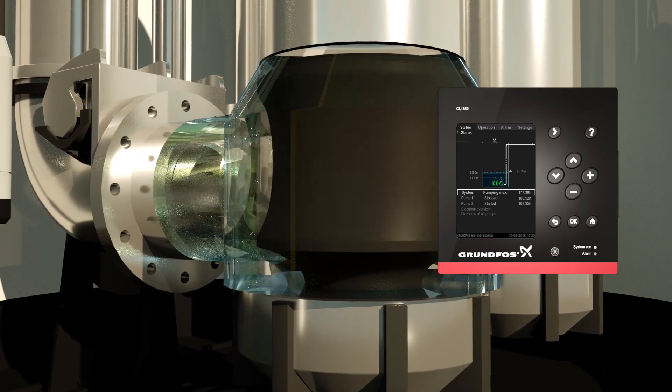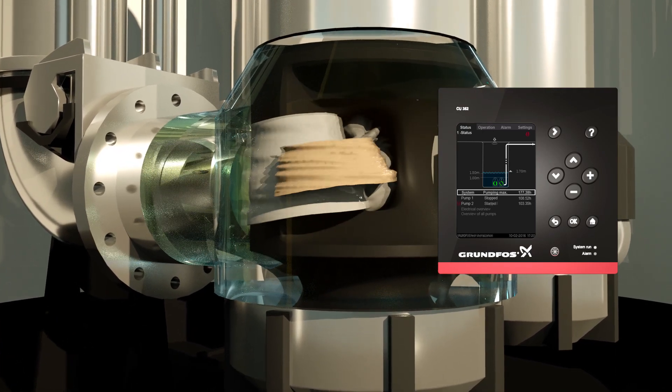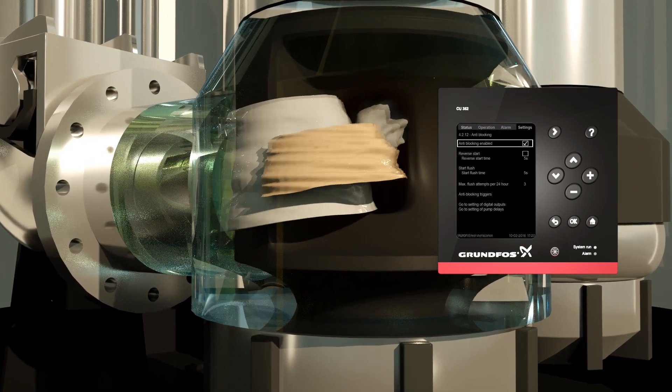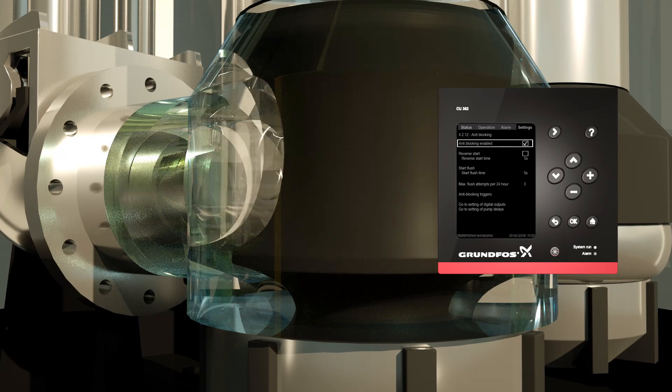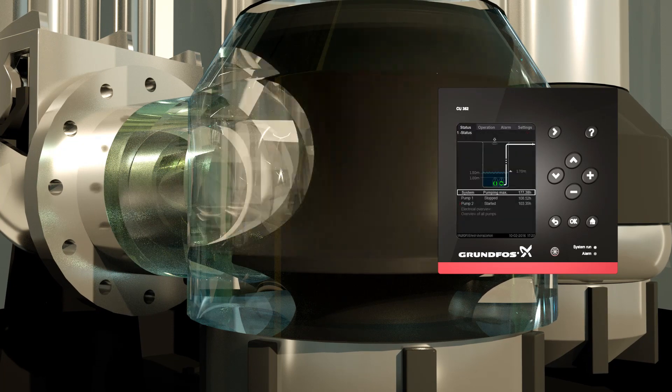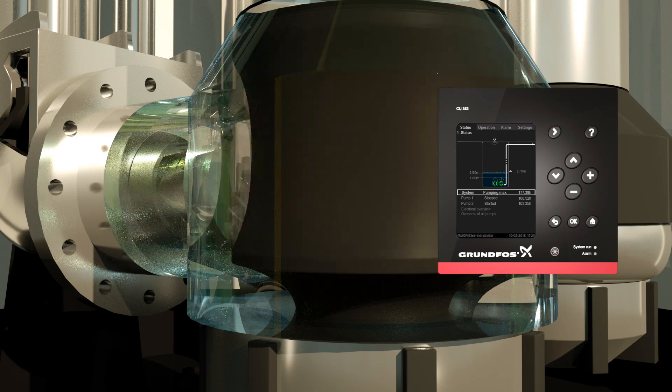However, if a blockage of the pump happens, the controller will recognize this and enable the pump to run in reverse to unblock the impeller. The anti-clogging function acts on any abnormal event, thereby stopping the pumps from blockage, in turn avoiding costly downtime.